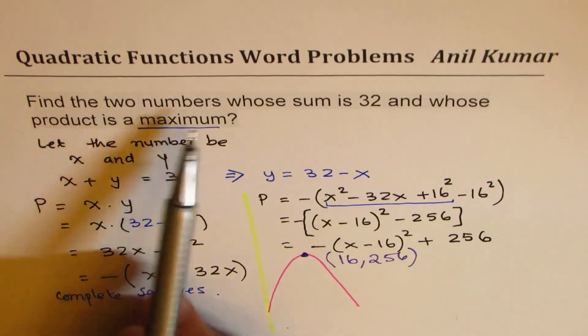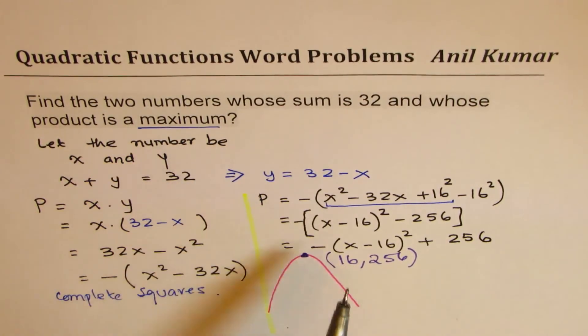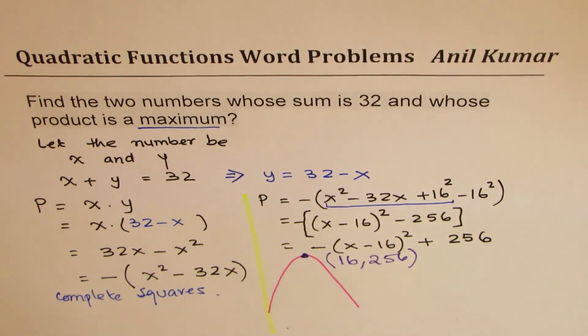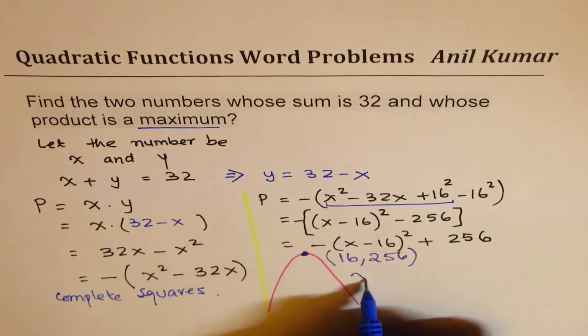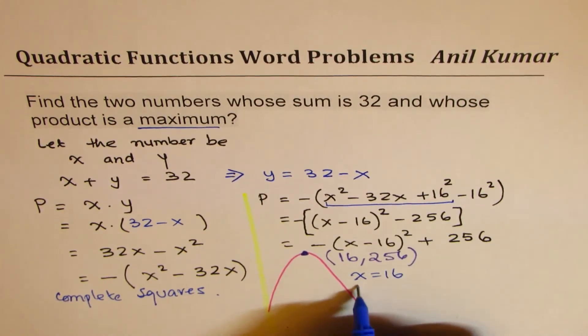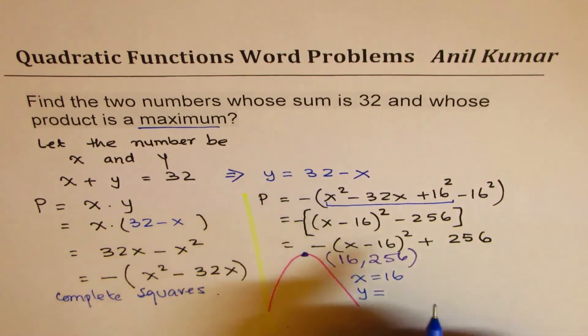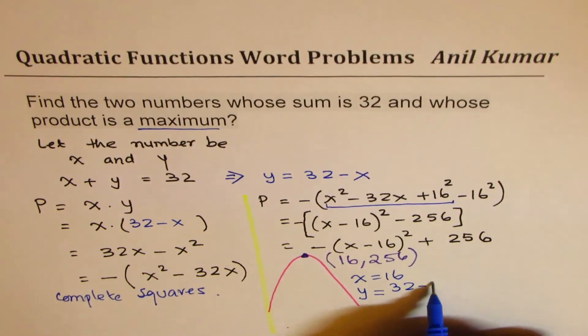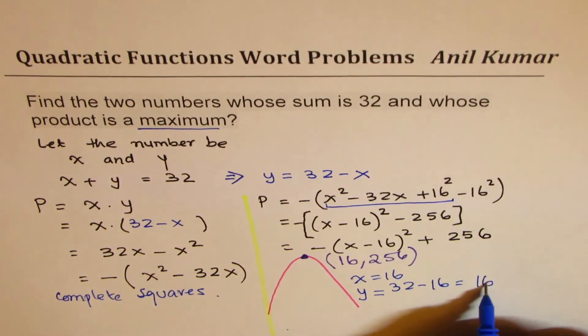This is find two numbers whose sum is 32, one of the numbers is 16. So we say x equals to 16. Y is equal to, now we're going to use this, 32 minus 16 which is also 16.